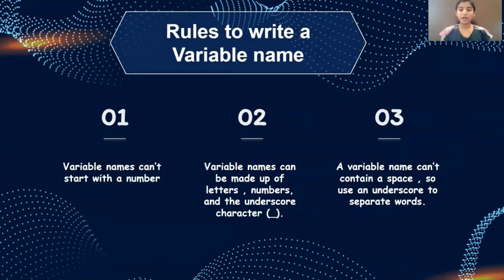Now let us look into the rules to write a variable name. Remember that variable name can't start with a number. It is made up of letters, numbers and we are allowing a special character that is underscore. A variable can start with alphabet and underscore but not numbers. But numbers can be in between a variable name. For example, a1 is a legal variable but 1a is an illegal variable.